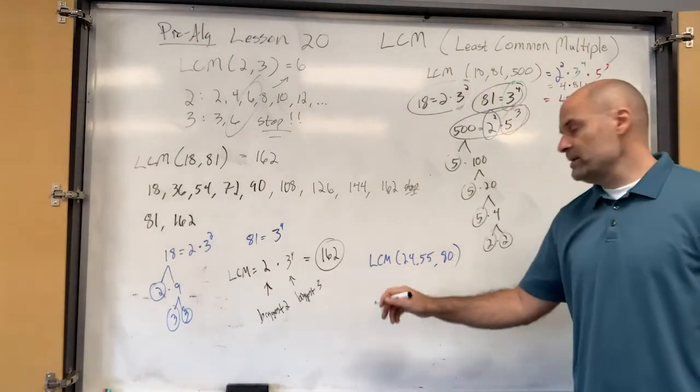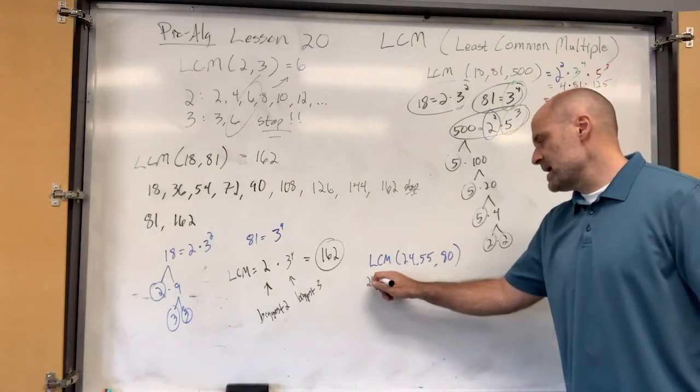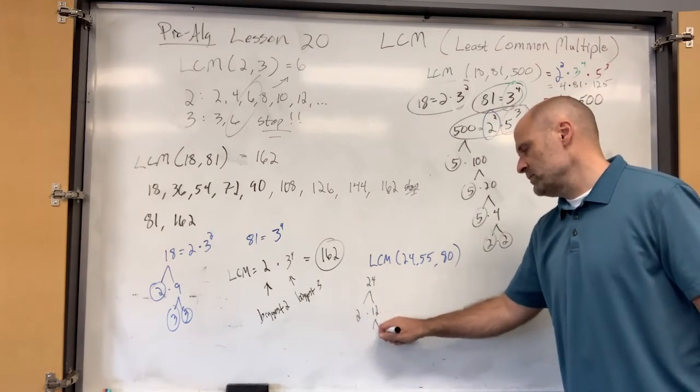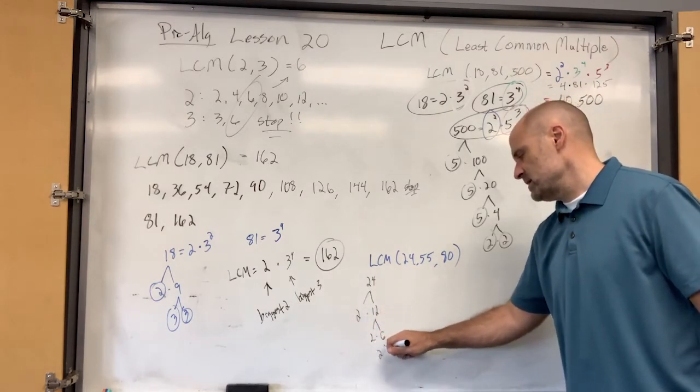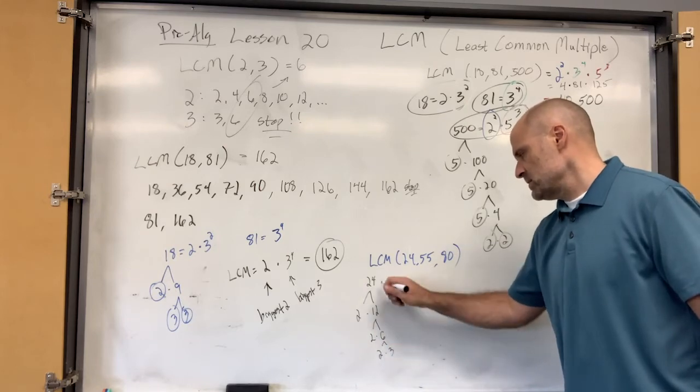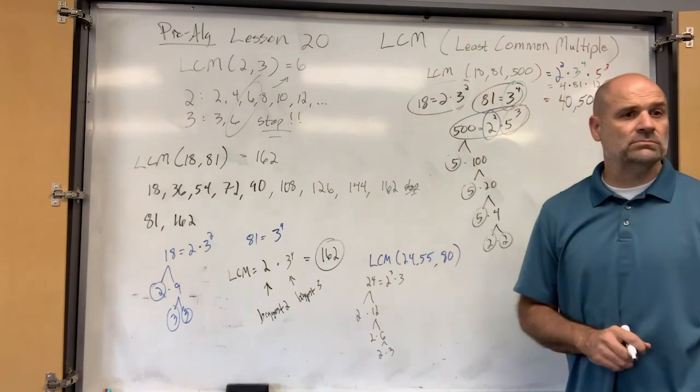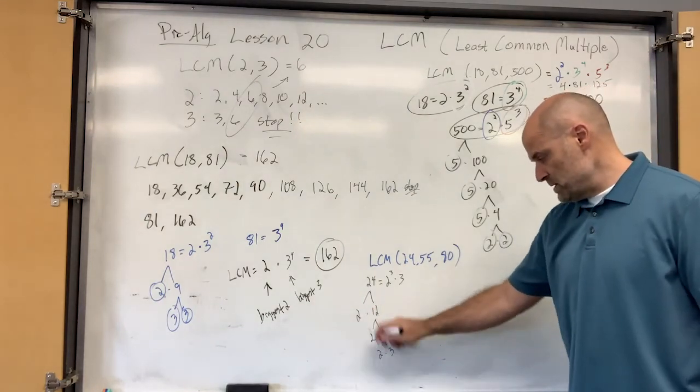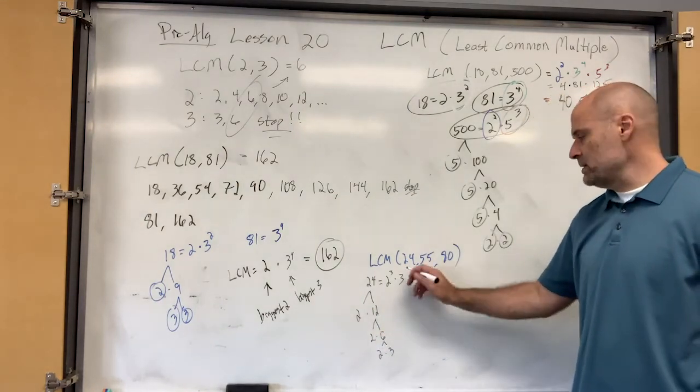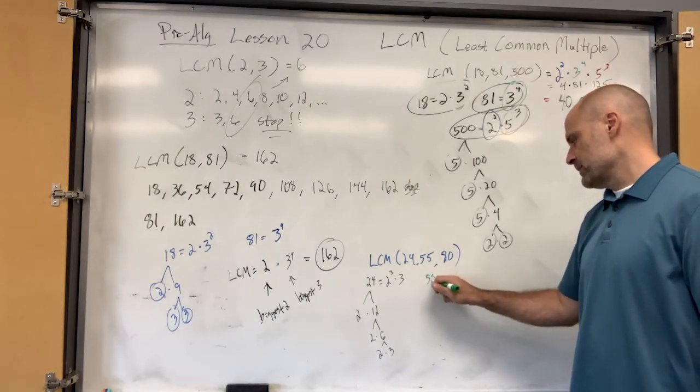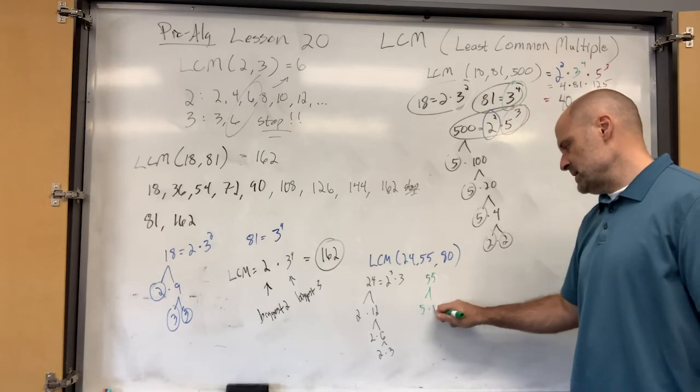So, twenty-four. How do you write twenty-four? You can use the cake method or the tree. What is that? Two times twelve, two times six, two times three. So, this is two to the third times three, right? Yes. Two, there's three twos being multiplied and one three. Okay, what about fifty-five? Five times eleven. And then you're done, right? That's nice.